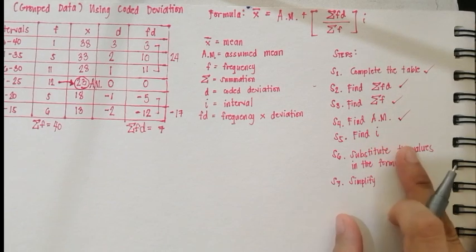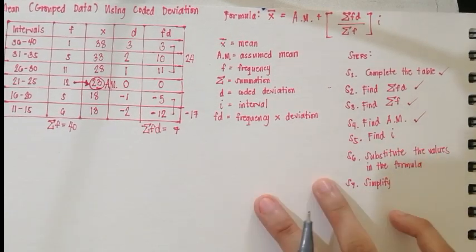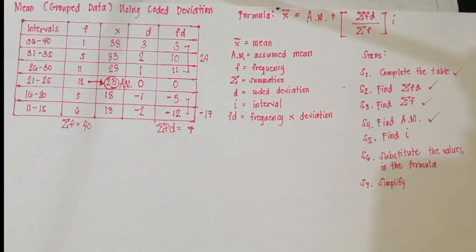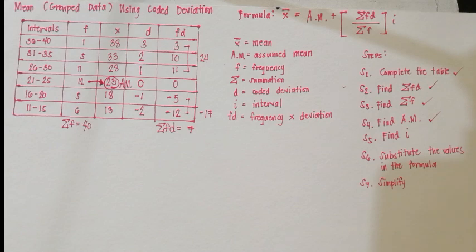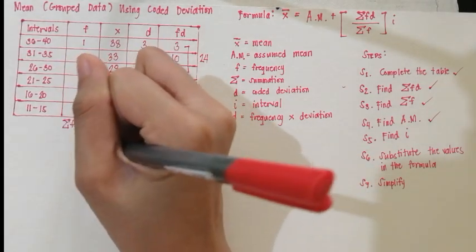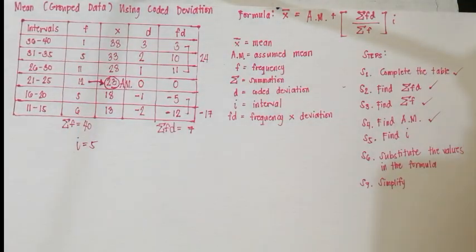Step 5: we need to find the interval. Look at the interval 11 to 15 and start counting from 11 to 15: 11, 12, 13, 14, 15. How many numbers do we have in that interval? We have 5 numbers. So our interval I is equal to 5. Step 5 is done.